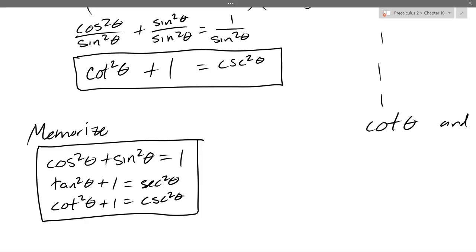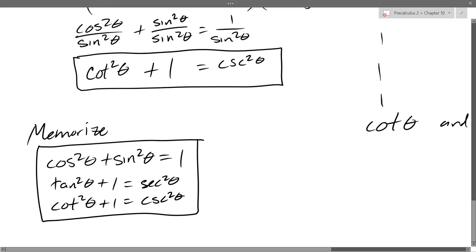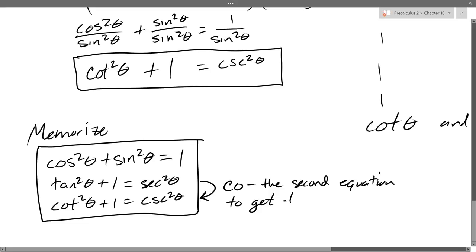This might look difficult to memorize, especially if you're not good at memorizing. Here's a good trick: if you remember the second equation, to get the third you just 'co' it. The second equation is tangent squared plus 1 equals secant squared. Put 'co' in front of tangent to get cotangent, don't co the 1, and turn secant into cosecant squared. So you really only need to memorize two, and co the tangent-secant equation to get cotangent-cosecant.